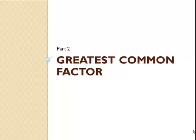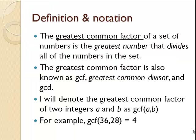Now let's talk about the greatest common factor. The greatest common factor of a set of numbers is the greatest number that divides all the numbers in the set. We also call this the GCF, the greatest common divisor, the GCD. I'm going to denote the greatest common factor of two integers as GCF with those two integers in parentheses.